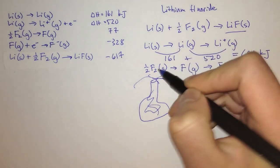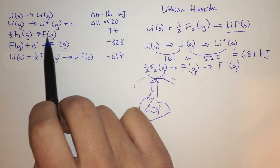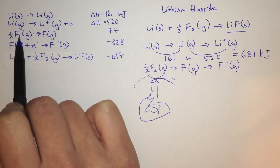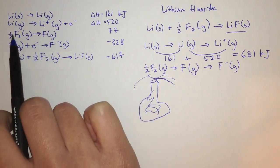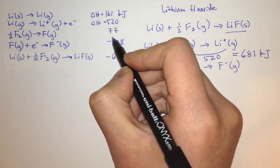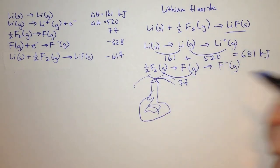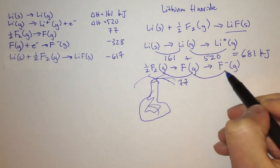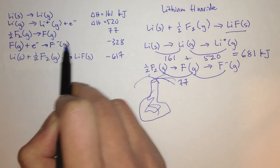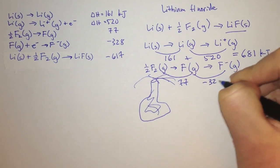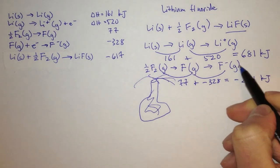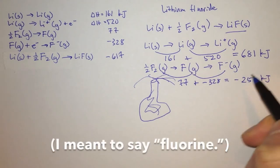We do the same thing with fluorine. We should always be careful when using these equations, because sometimes they take 1 F2 and make 2 F. This time they were nice enough to use half an F2 to make 1 F, so we can use the 77 kJ number directly. Going from fluorine gas to F minus, we give it an electron, and that's negative 328 kJ. Adding these up, we get negative 251 kJ for the heat of formation of a gaseous fluorine ion.